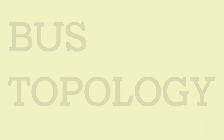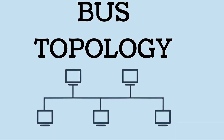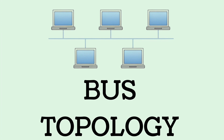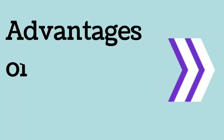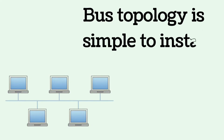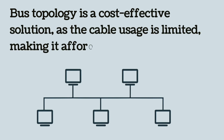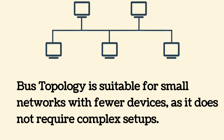Bus topology: all devices share a single central cable, where one long cable acts as a single communication channel and all devices are connected to it. Bus topology is also used in cable television networks. Advantages: it is easy and simple to set up, cost-effective since cable usage is limited, and suitable for small networks with fewer devices as it does not require complex setups.